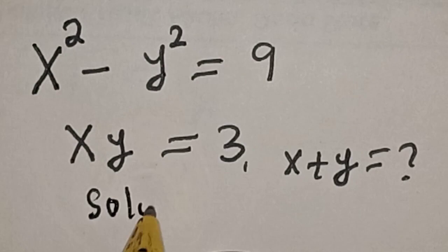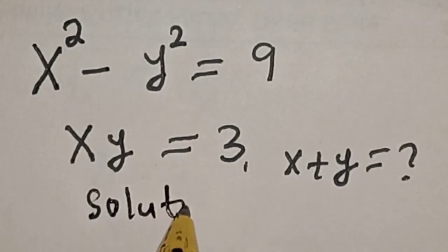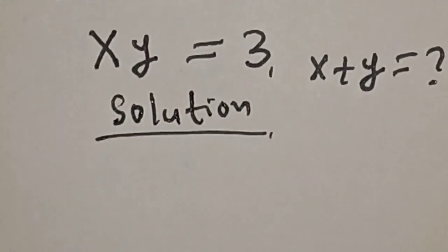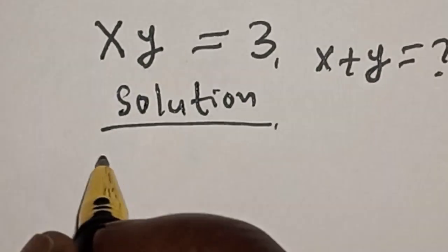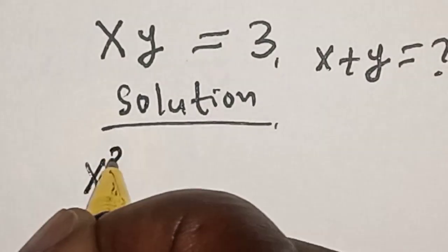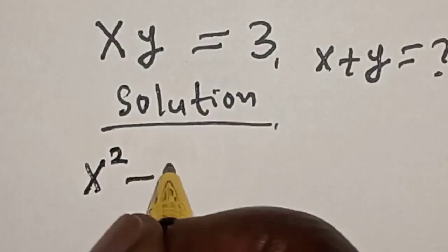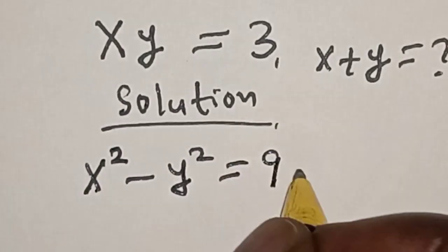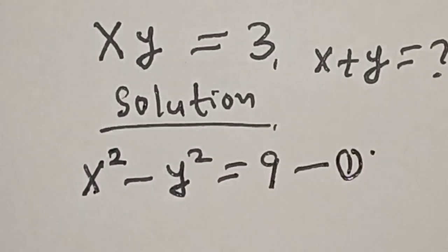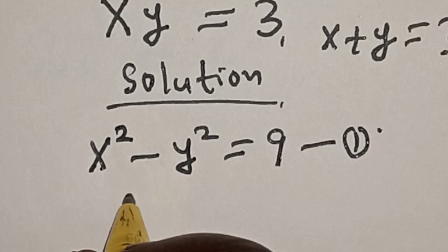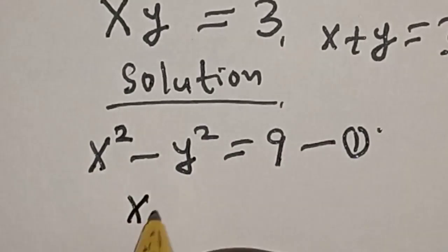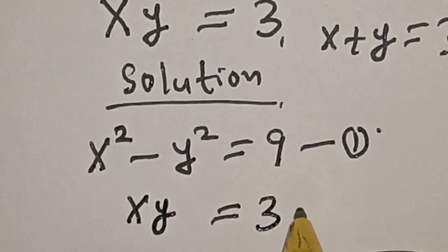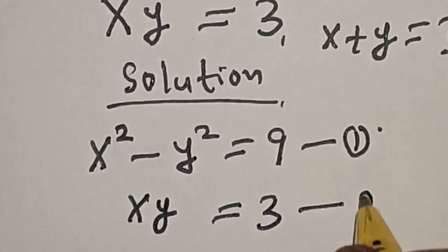Solution. We have the given question: x squared minus y squared is equal to 9. Let's call this equation 1. Then also, xy is equal to 3. Let's call this equation 2.